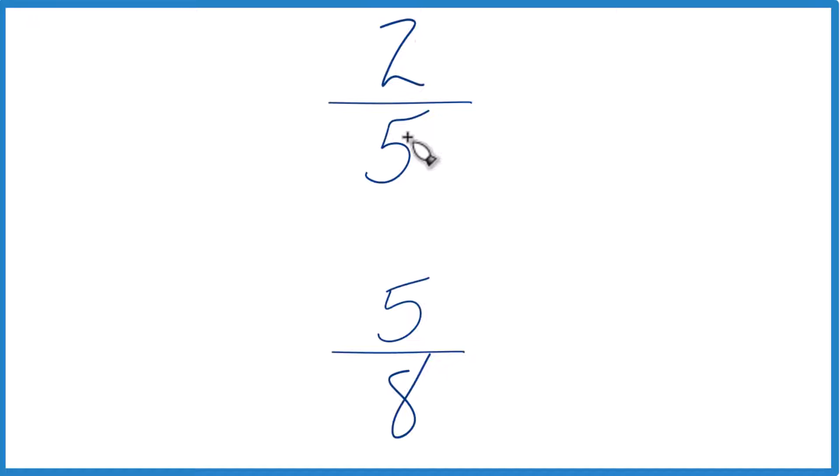The other way to do it is find a common denominator. Right now we have 5 and 8. But if that was the same, then we could just compare these numerators and we'd be done.